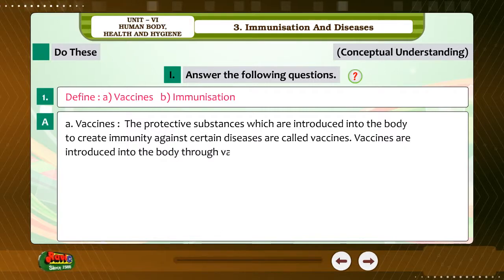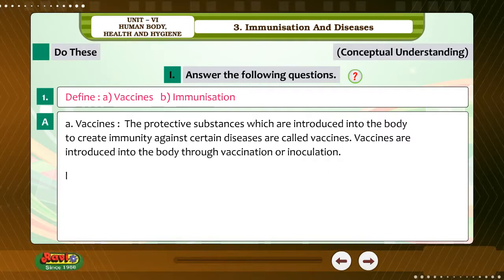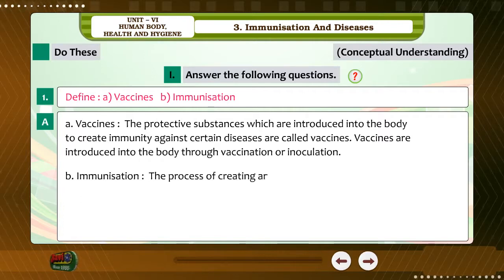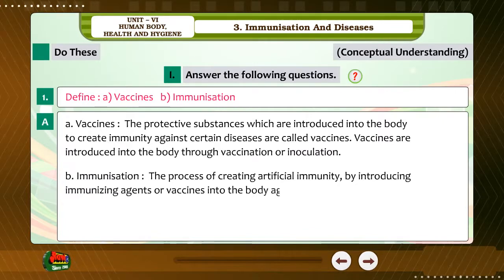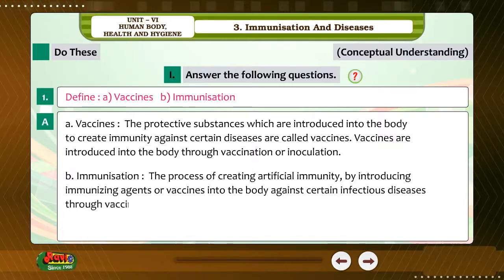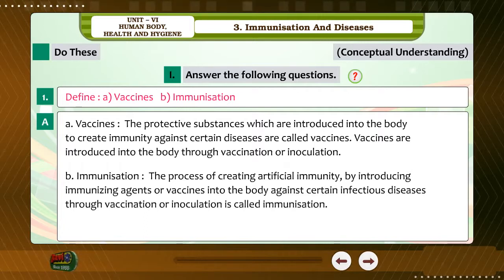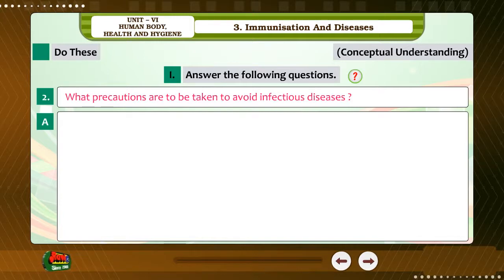Vaccines are introduced into the body through vaccination or inoculation. Immunization: The process of creating artificial immunity by introducing immunizing agents or vaccines into the body against certain infectious diseases through vaccination or inoculation is called immunization.